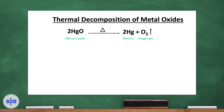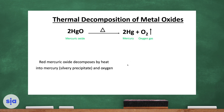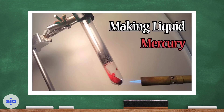Now we will discuss the thermal decomposition of metal oxides. Mercury oxide is an example. By heat, we can decompose mercury oxide into mercury and oxygen gas. Mercury oxide is red, and when it decomposes by heat, it produces a silvery mercury precipitate on the test tube while oxygen leaves as a gas.